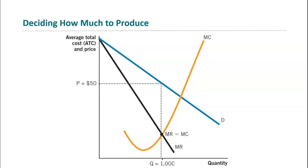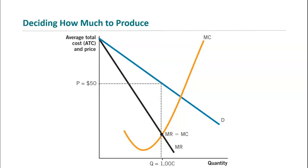As we saw in the last video, marginal revenue is always lower than price — or the demand curve, which is where price comes from — for a monopolist. So a monopolist has a marginal revenue curve that's always below the demand curve, because of the price and quantity effect whenever you change your quantity. And then there's a marginal cost curve that looks like what we're used to.